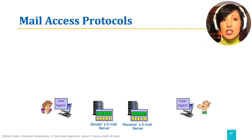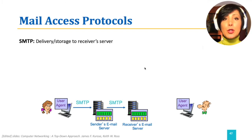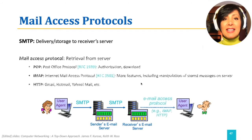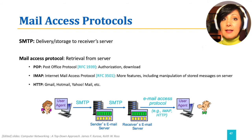A question you might have by now is how the user agent receives messages from the mail server. SMTP is in charge of delivering messages from the user agent to the SMTP sending server, and from the SMTP sending server to the SMTP server of the recipient, until it is stored in the user mailbox. From there on, mail access protocols like POP, IMAP, or HTTP in the case of webmail, deliver the emails to the user.